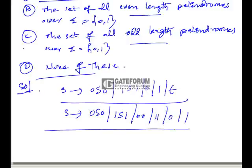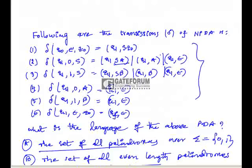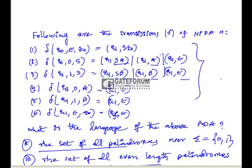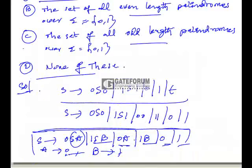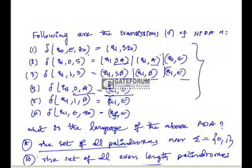This gives both even length and odd length palindromes. If you convert to Greibach Normal Form you get: 0SA | 1SB | 0A | 1B | 0 | 1, where A → 0 and B → 1. This is converted into an equivalent PDA because S is replaced appropriately, yielding epsilon transitions like q1, 0, A and so on. This PDA generates all palindromes, so option A is the correct answer.